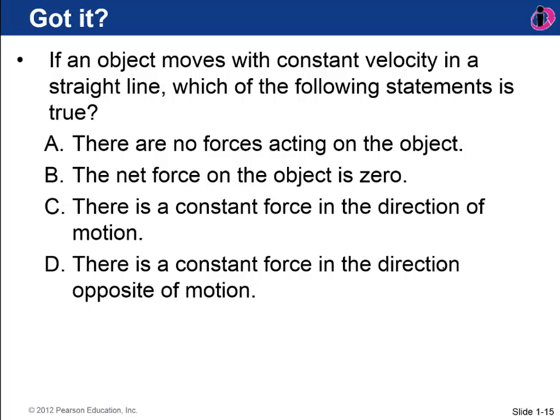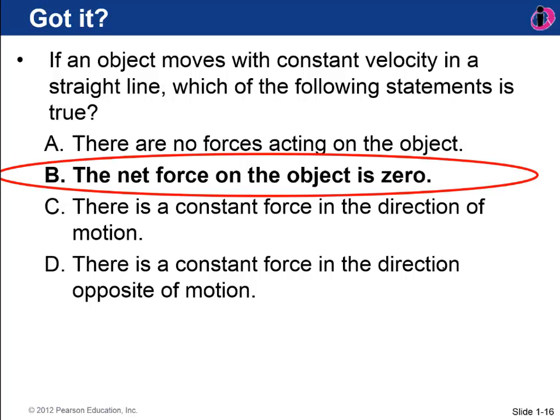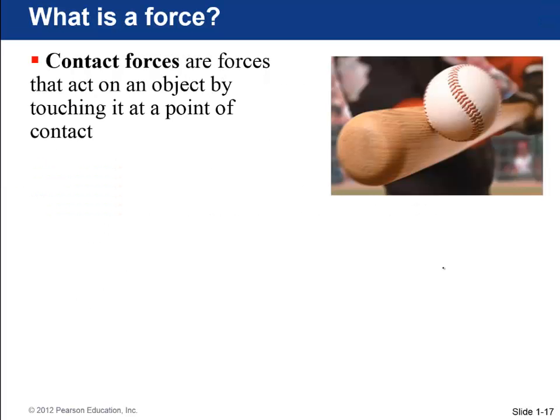Let's do a quick question here for you, just to see if you're keeping up. An object moves with a constant velocity in a straight line. Which of the statements is true? Is there no forces acting on the object? B, the net force on the object is zero. C, there's a constant force in the direction of motion. Or D, there's a constant force in the direction opposite to the motion. Think about that. The answer there is that the net force on the object is zero. There could be forces acting on them, but the vector sum of all those forces has to be zero. And then the object will move at a constant velocity.